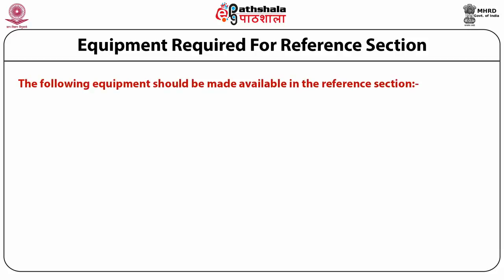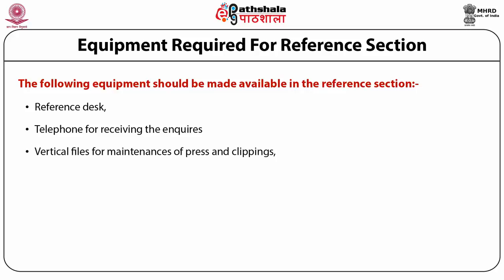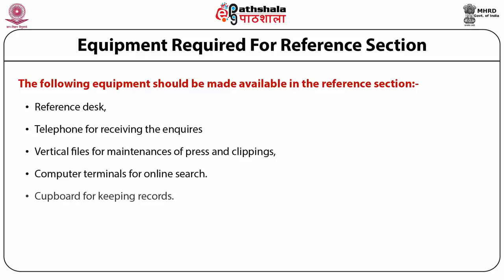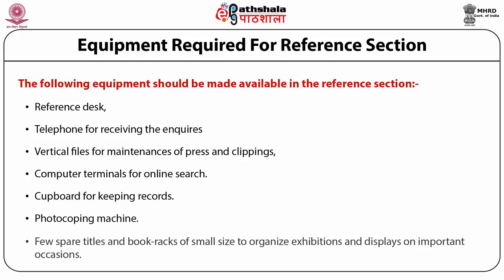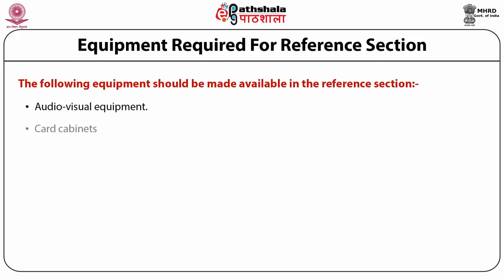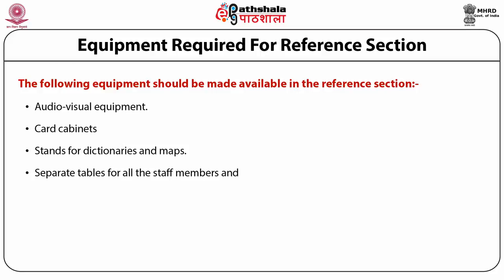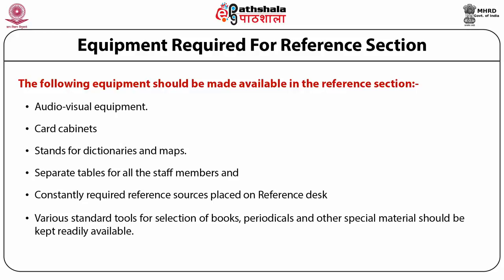The following equipment should be made available in the reference section: reference desk, telephone for receiving inquiries, vertical files for maintenance of press clippings, computer terminals for online search, cupboard for keeping records, photocopying machine, book racks of small size to organize exhibitions and displays on important occasions, audio visual equipment, card cabinets, stands for dictionaries and maps, separate tables for all staff members and enough space for work. Constantly required reference sources should be placed on the reference desk, and various standard tools for selection of books, journals, and other special material should be kept readily available.